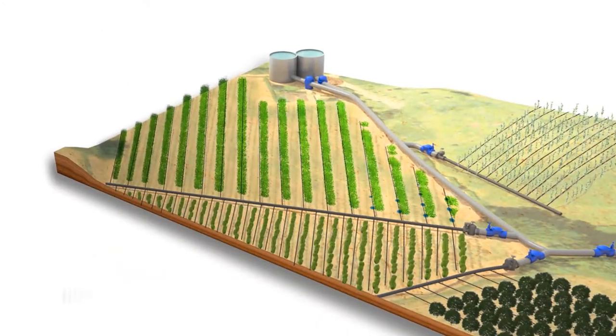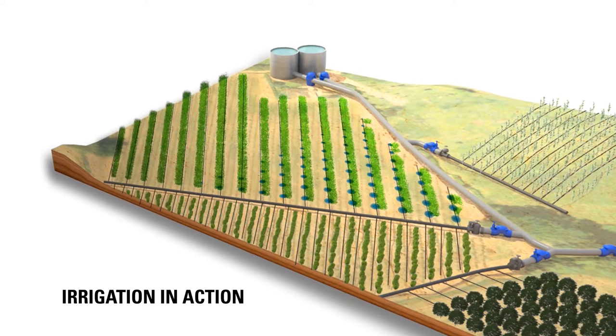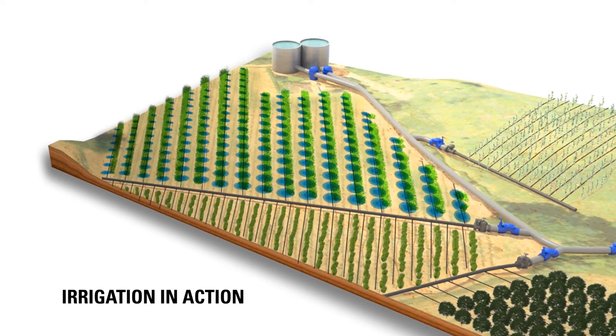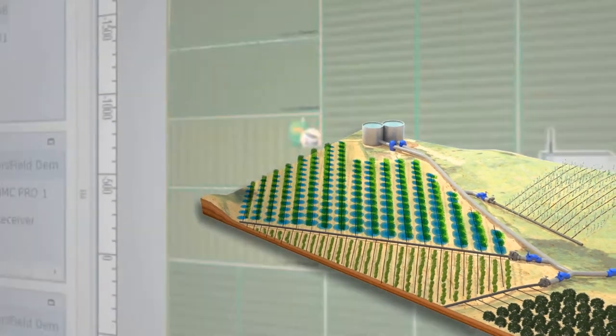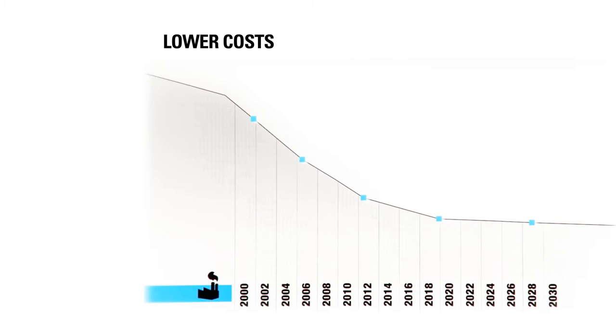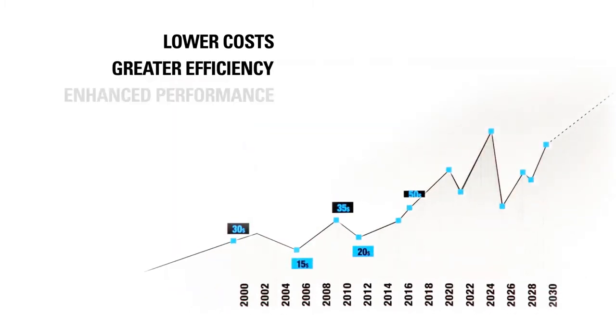The industry's most advanced system of its kind, U-Manage ensures precise delivery of nutrients, optimizes resource usage, and controls irrigation scheduling. Leading to lower costs, greater efficiency, and enhanced agricultural performance.